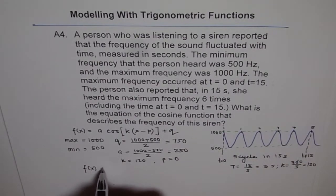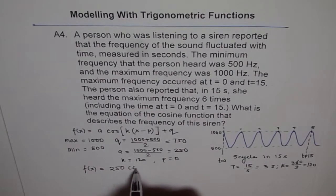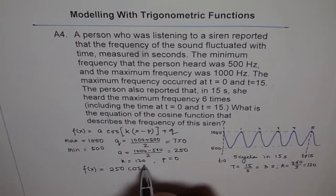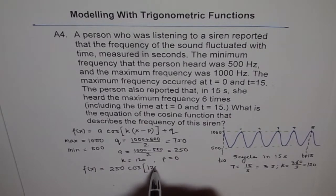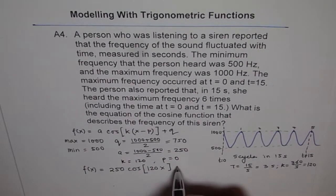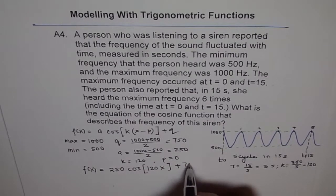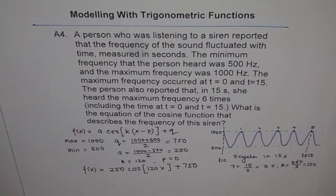Therefore, our function f of x is equals to 250 cos of k is 120, x plus q is 750. So that is the equation which represents this particular situation.